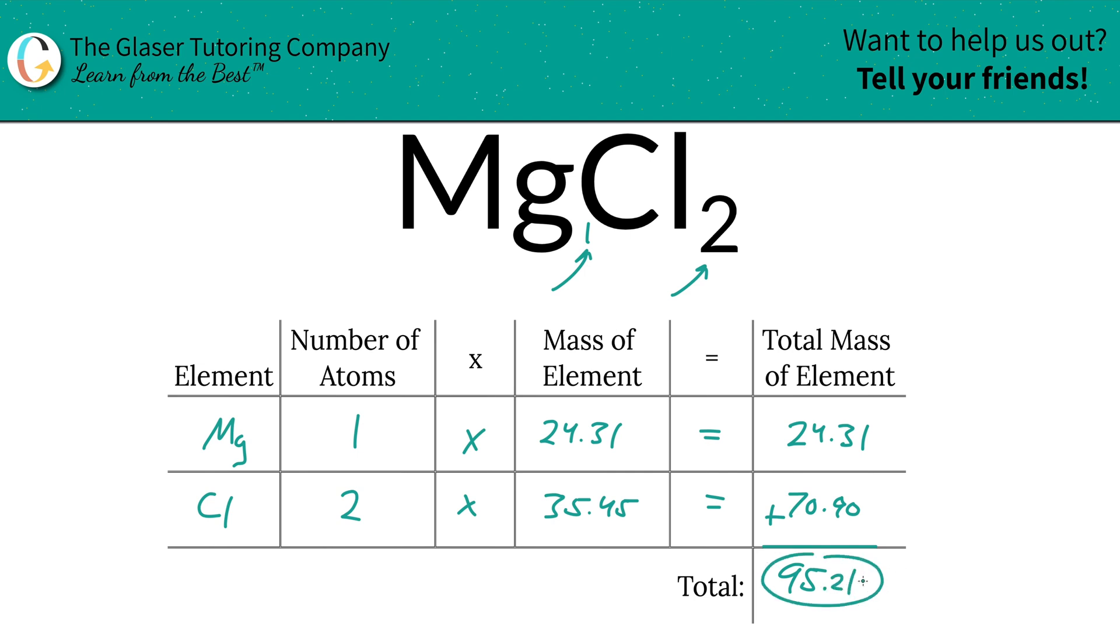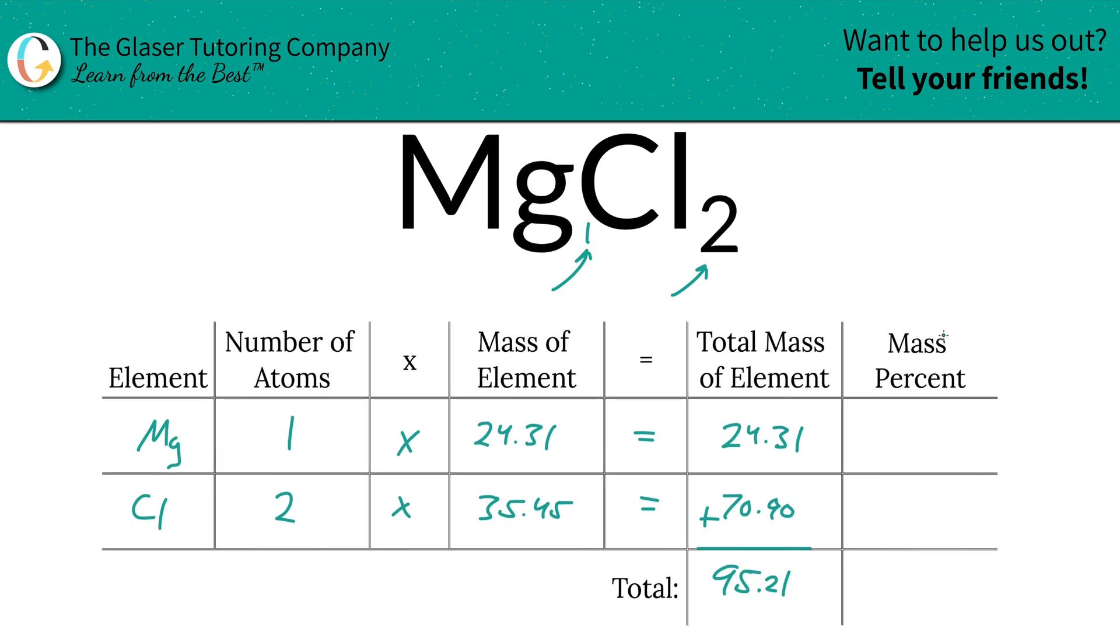I'm going to add a column now to the table to help us calculate the percentages. To find the mass percent of magnesium, we're going to take the total amount of magnesium, 24.31, and then divide it by the total mass of the compound, 95.21.